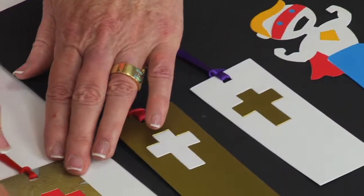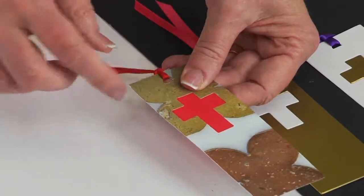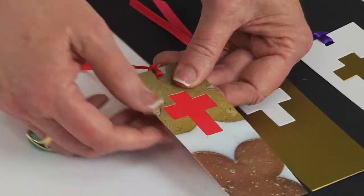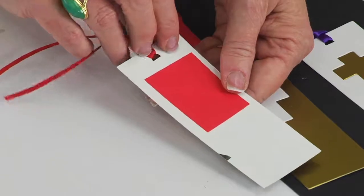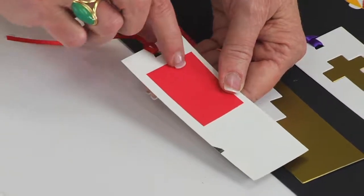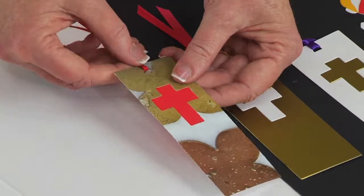I even started getting so many catalogs at home that I started using my catalog covers and inside pages to cut bookmarks as well. And then you can see in this case, I layered a piece of red paper to show through the back.